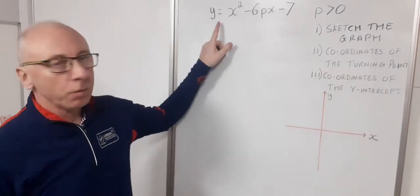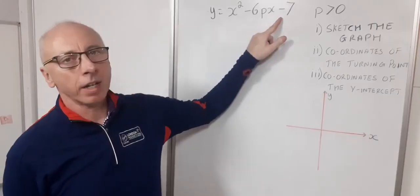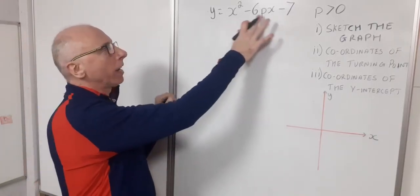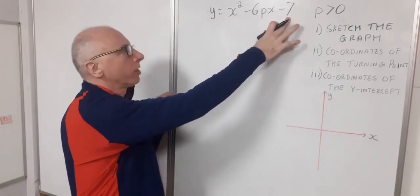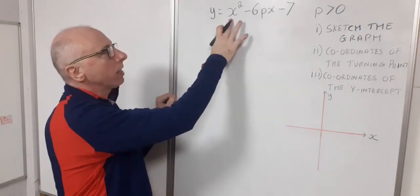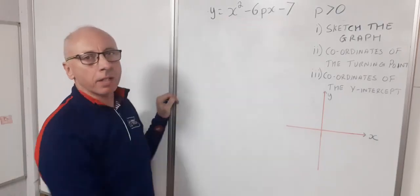So we've got a question here. We've got y equals x squared minus 6px minus 7. Taking a look at this, we've got x squared, x and a constant. So this is the form of a quadratic where a is 1, b is minus 6p and c is minus 7.